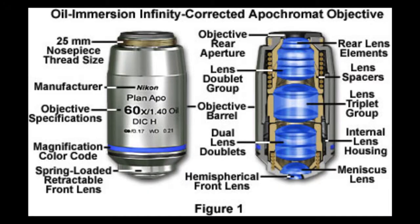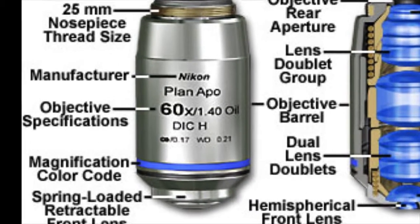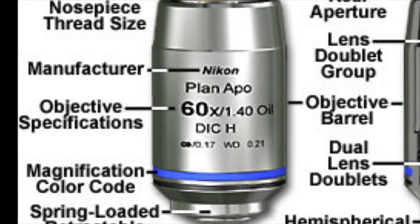The first thing you see on the objective — this one is a Nikon objective, but we'll be working with Leica objectives on the microscope we're using. There's a description of the type of lens: plan apo. We'll discuss that again in a bit, but more importantly, the magnification of the objective. Here it's printed 60x, or 60 power. You're going to be working with a 20x objective.